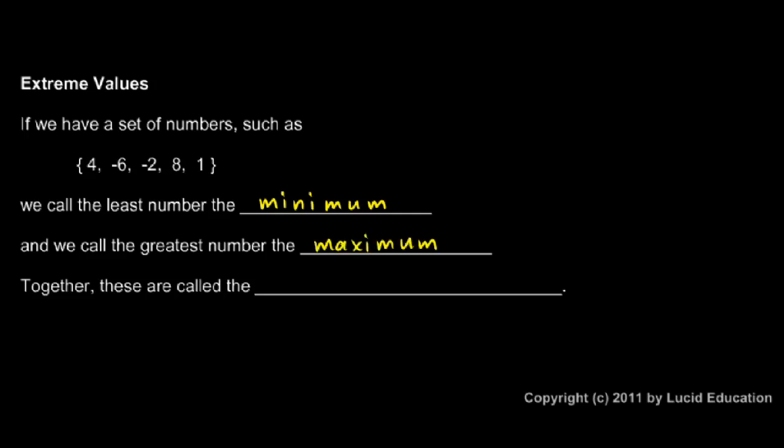And that's consistent with the way we ordinarily use those words, minimum and maximum. Together, these two numbers, the minimum and maximum, are called the extreme values.